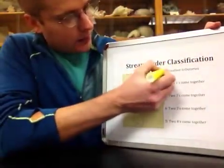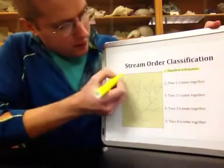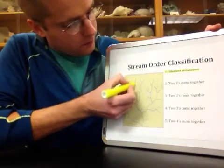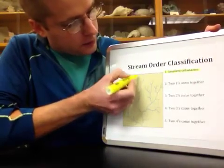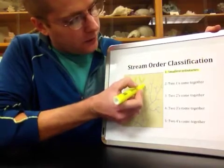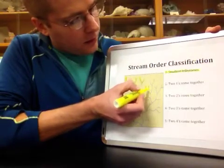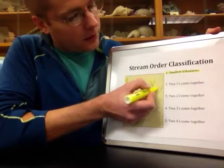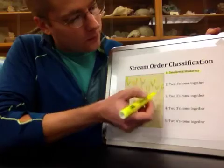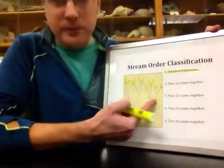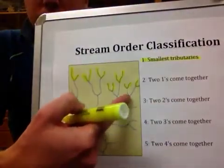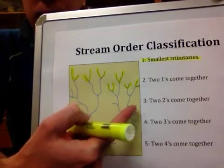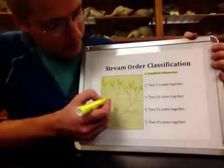I'm going to highlight them in yellow. Everywhere that the small streams first start, before they hit another stream, we highlight in yellow. These are all number one, or first order, streams. So even though this one hits further down on a river, because it still is the first tributary, it's a first order stream that we highlight.